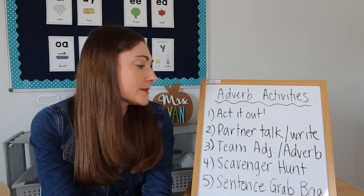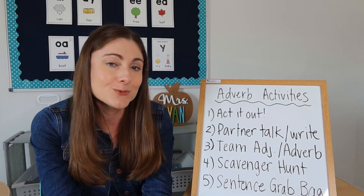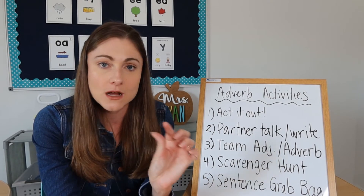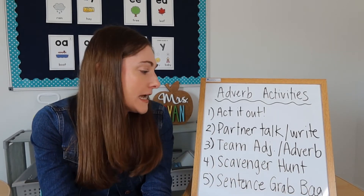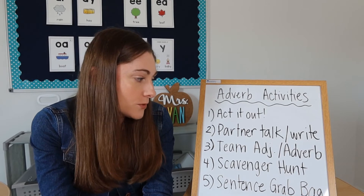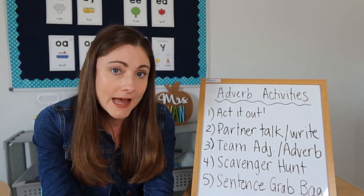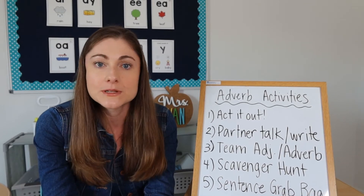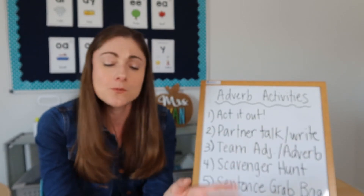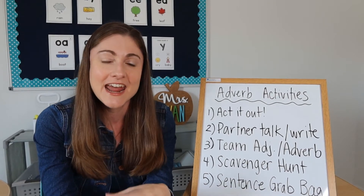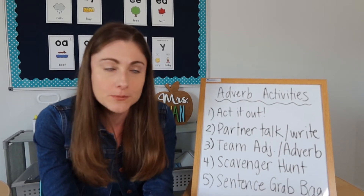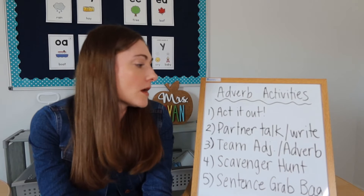Next is partner talk and/or write. In this simple activity, you have a list or some adverbs on index cards. Kids work in partners — one child selects an adverb and the other partner has to either say a sentence that includes it (the easier version) or write a sentence with the adverb. Then they switch roles, going back and forth with several different adverbs.